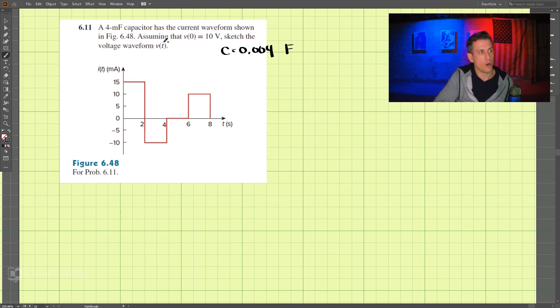And we're assuming that the original voltage at time 0, the voltage at time 0, is 10 volts. And we're supposed to sketch the voltage waveform.